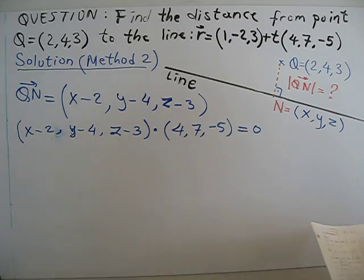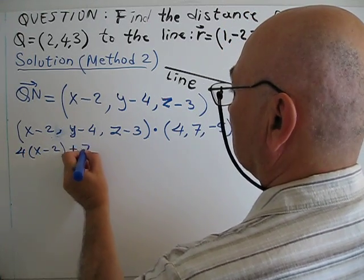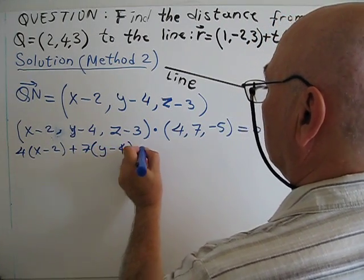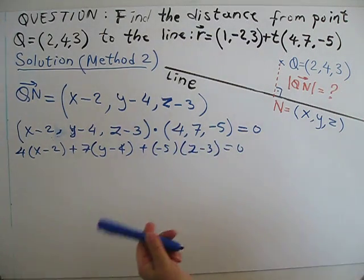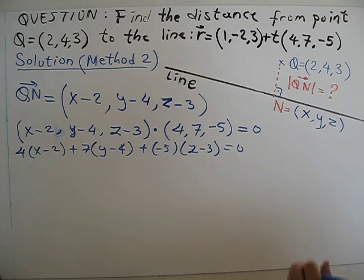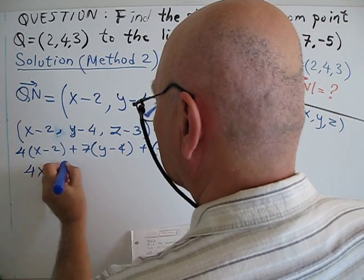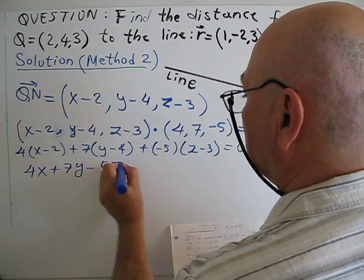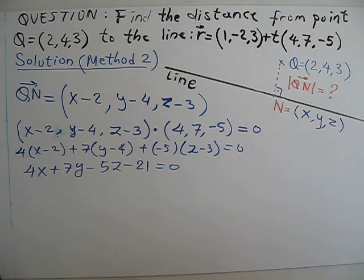It equals zero. When I multiply this: 4 times (x minus 2), plus 7 times (y minus 4), plus negative 5 times (z minus 3). As you know, the dot product multiplies corresponding coordinates and sums them — it equals zero. When I work this out, the result is: 4x plus 7y minus 5z minus 21 equals zero. I got an equation, but this equation has three unknowns. How can I solve this equation?